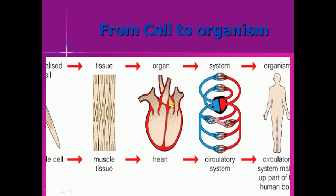Organs combine to form a system. You can see here in this diagram a circulatory system — there are different organs and parts: the heart, the capillaries, the arteries shown in red, and the veins. Different organs combine to form a system, and then different systems combine to form an organism, like the digestive system, respiratory system, circulatory system, etc.